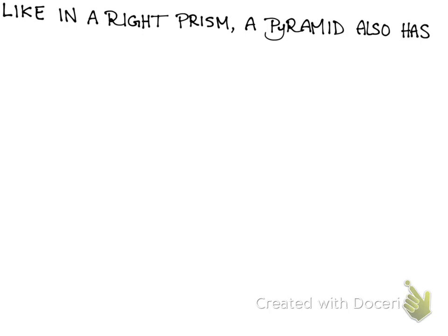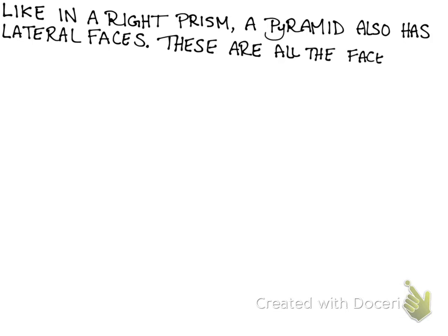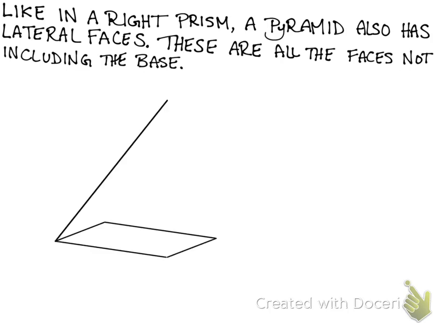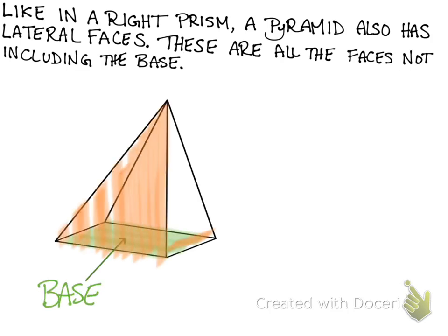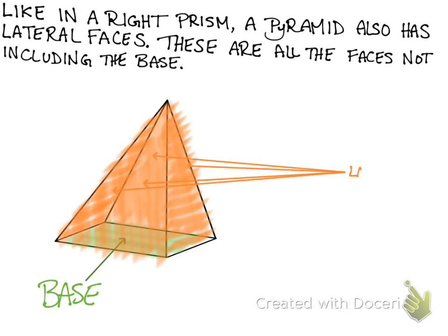So just like in a right prism, a pyramid also has lateral faces. These are all the faces that don't include the base. The base here is green; all the other faces here are triangles which I have colored orange. These orange faces are called lateral faces.